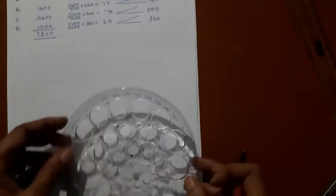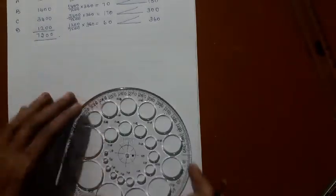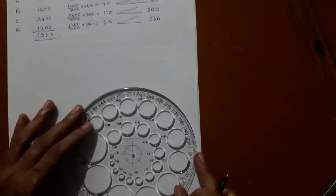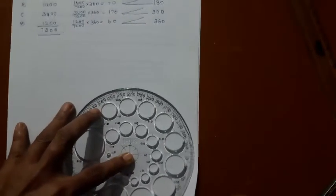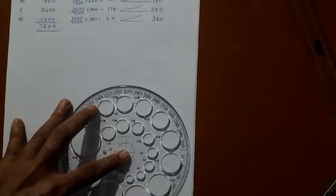Let me plot a point here. That is the center. Now let me place the pro circle with the center of the pro circle coinciding with the point which I have plotted.